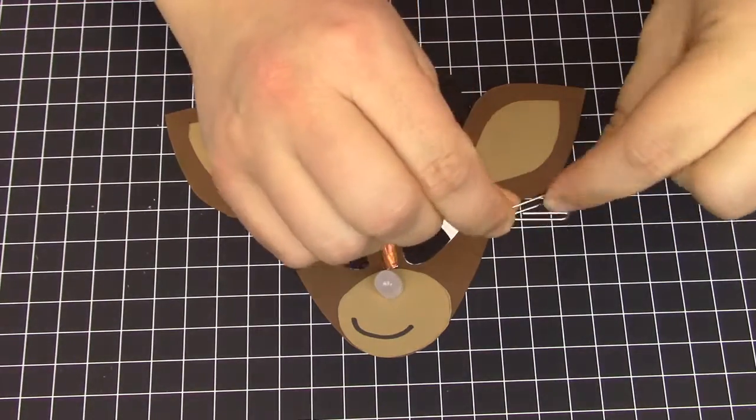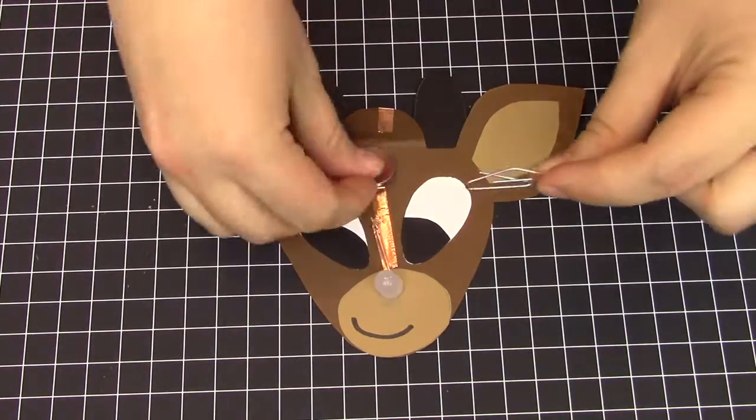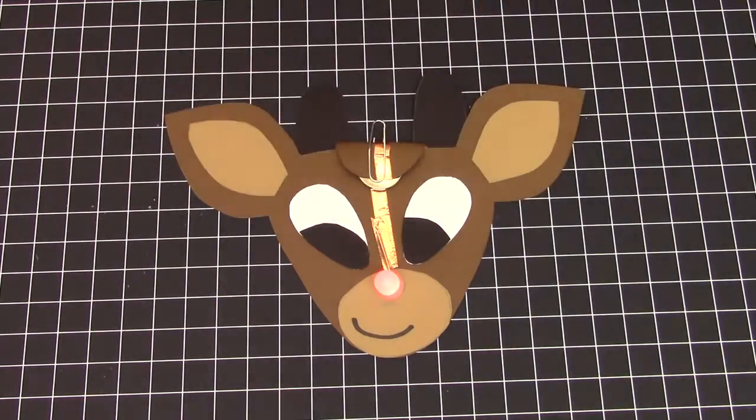And finally, take your paper clip and bend it as shown. Slip this around your battery to hold it in place.